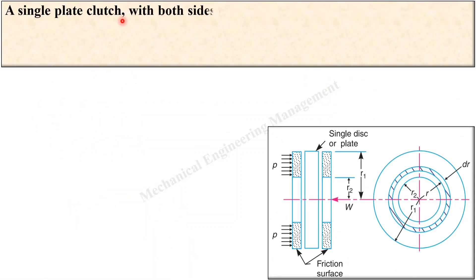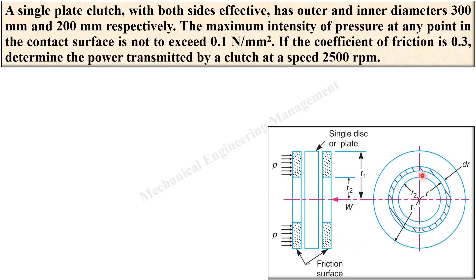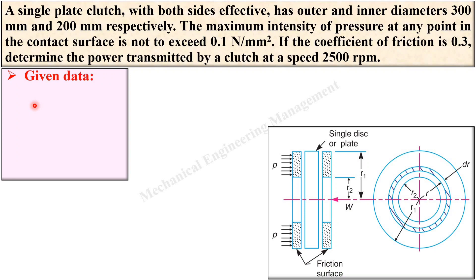Consider a single plate clutch. Looking at this figure, write down the given data with symbolic notation. Here it is written: a single plate clutch with both sides effective. So you can say n is equal to 2, because both sides are effective. If only one side is effective then n is equal to 1.